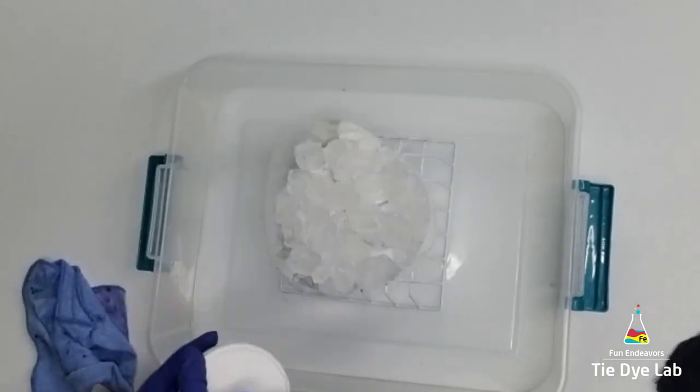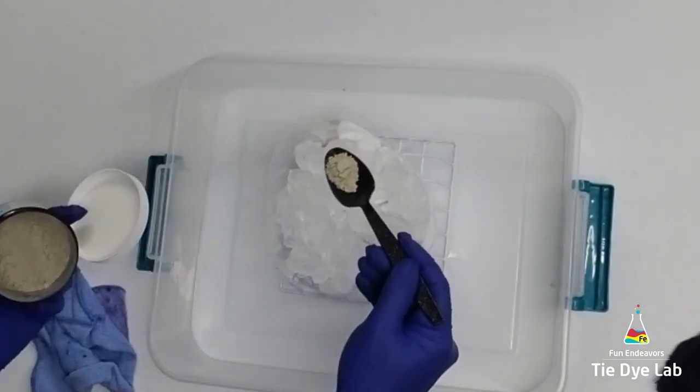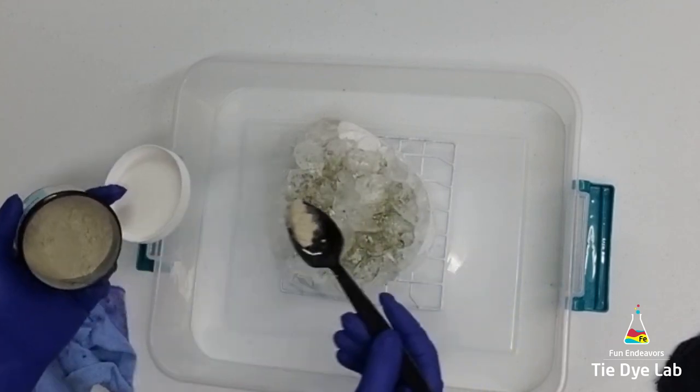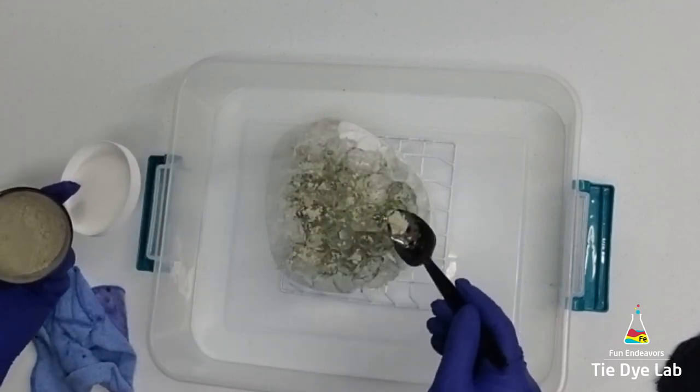Then I'm just going to use a single color for this one. I'm going to use Sea Glass from Dharma Trading Company. I'm just going to sprinkle the Sea Glass on the top and add some soda ash.